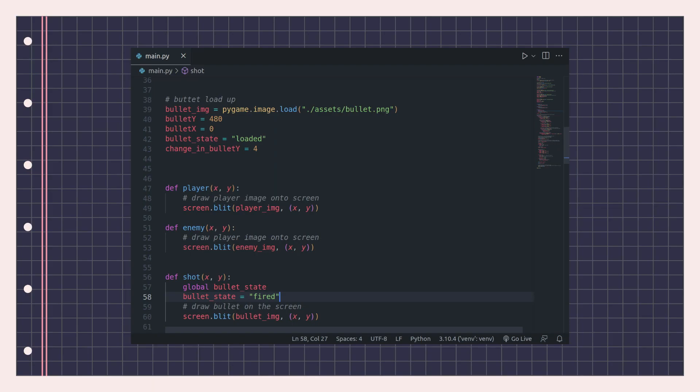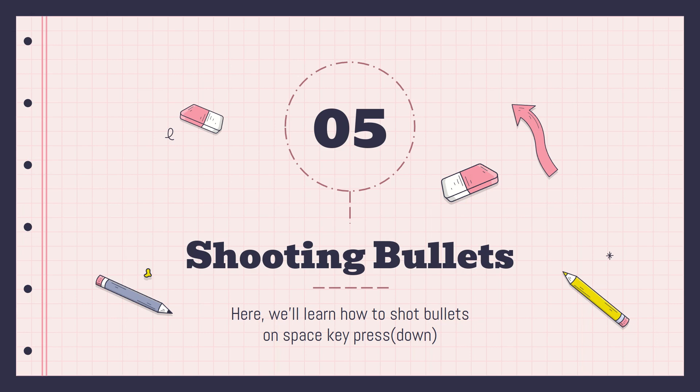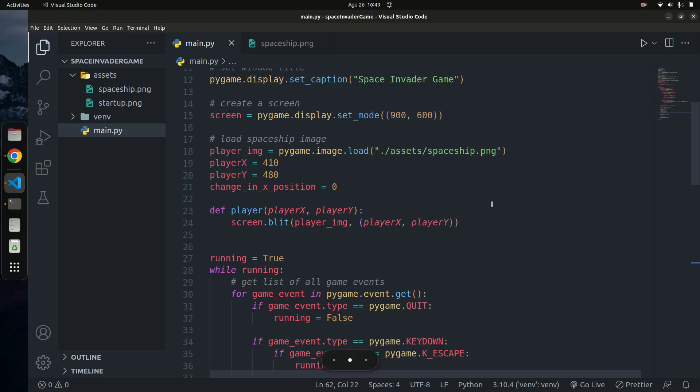First, we need to download an image to use for the bullet. You can go to flaticon.com and download an image from there. Search for a bullet or missile and download a similar image. I've already downloaded my bullet image — let me grab it.